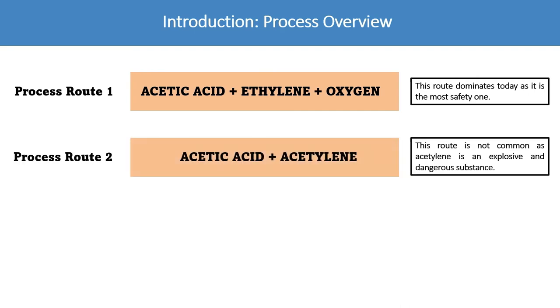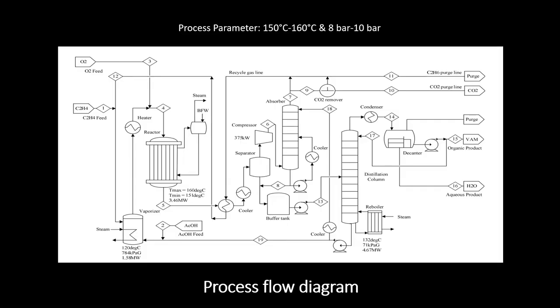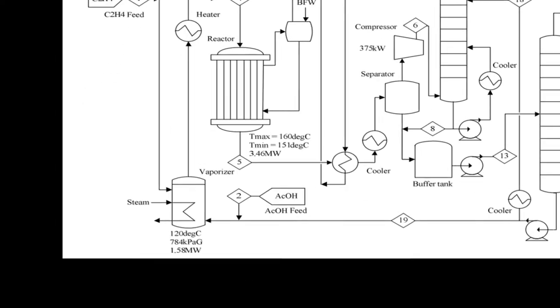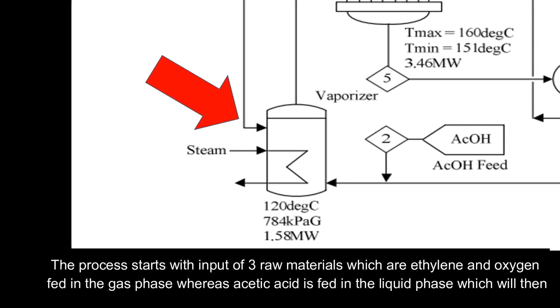This is the process flow diagram for vinyl acetate monomer production. The process starts with the input of three raw materials: ethylene and oxygen fed in the gas phase.